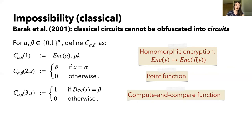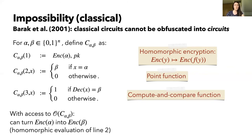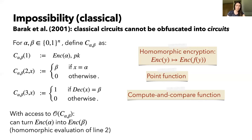Now notice that if you have access to this functionality through an obfuscation of C_alpha_beta, you could first request an encryption of alpha, then turn that encryption of alpha into an encryption of beta by homomorphic evaluation of the second line of C, and then input that resulting encryption into the third line to observe the output one. For the homomorphic evaluation, it's crucial that you have access to the obfuscation for C — not just an oracle — because you want to run the homomorphic versions of each gate in that obfuscation, break the obfuscation up into its individual gates, and run the homomorphic version of them. If you do this on the circuit C, you will get output one out of the last line.